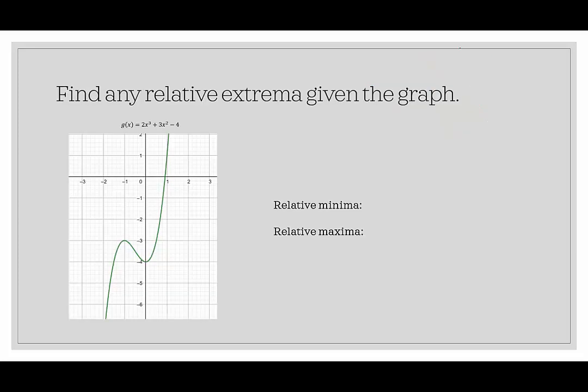Let's look at some examples. So first we're given the graph of g(x), which is given by the equation 2x³ + 3x² - 4. I see a relative maximum right here, and that relative maximum would be at the ordered pair (-1, -3). So relative maxima would be (-1, -3).